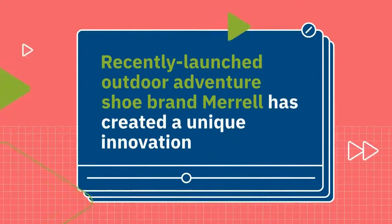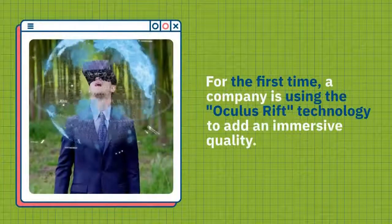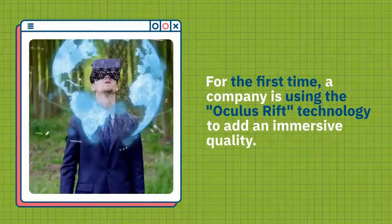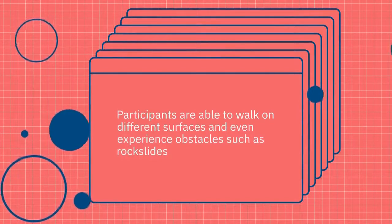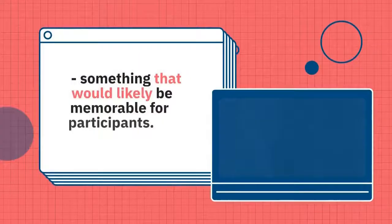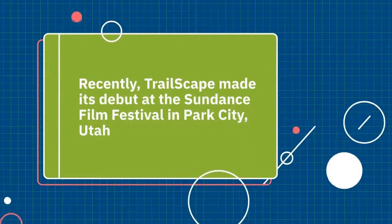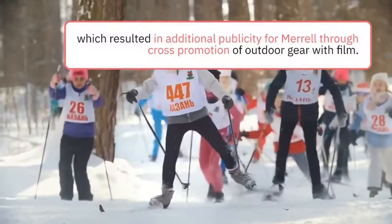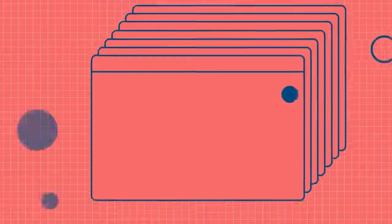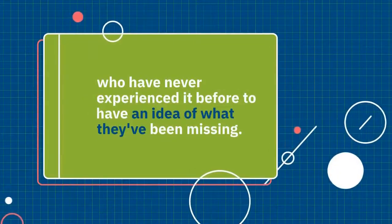Recently launched outdoor adventure shoe brand Merrill has created a unique innovation in their latest 4D multi-sensory hiking experience from Trailscape. For the first time, a company is using the Oculus Rift technology to add an immersive quality. Participants are able to walk on different surfaces and even experience obstacles such as rock slides, something that would likely be memorable for participants. Recently, Trailscape made its debut at the Sundance Film Festival in Park City, Utah, which resulted in additional publicity for Merrill through cross-promotion of outdoor gear with film. This was totally immersive and allowed people who have never experienced it before to have an idea of what they've been missing.